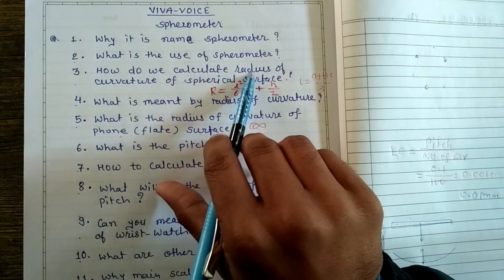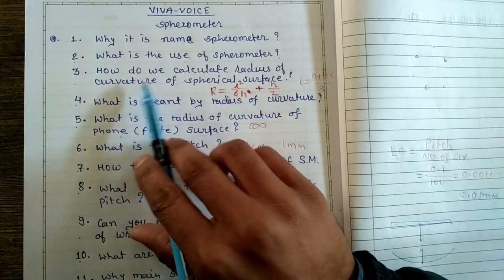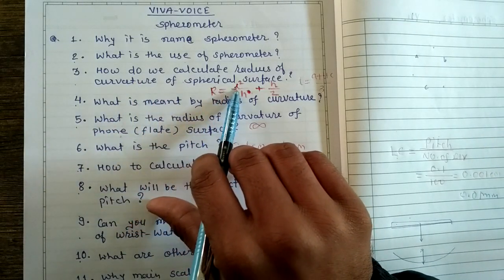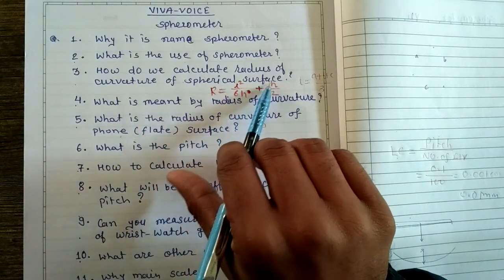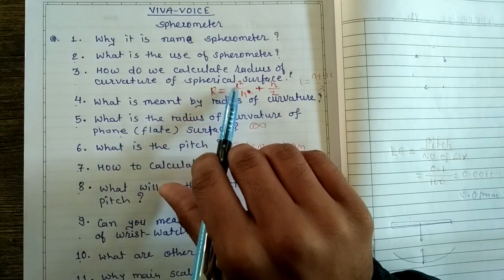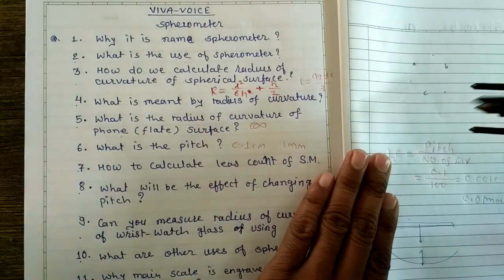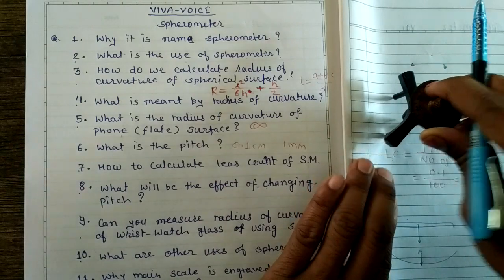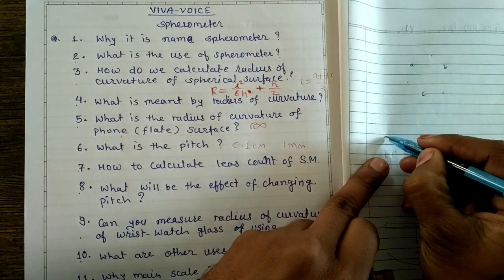How do we calculate radius of curvature? The formula is r equals l squared over 6h plus h over 2, where l is the average length. You put the spherometer over a plane surface.